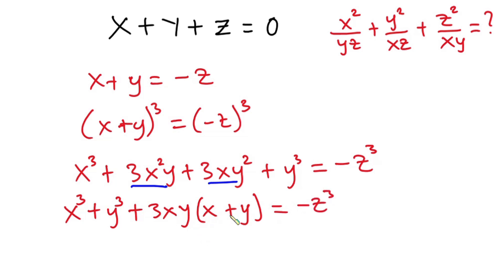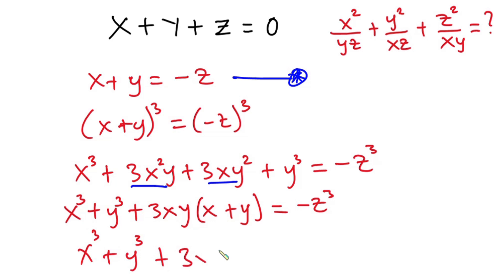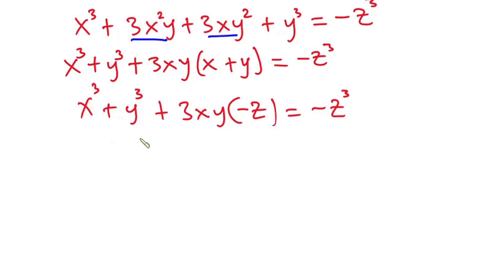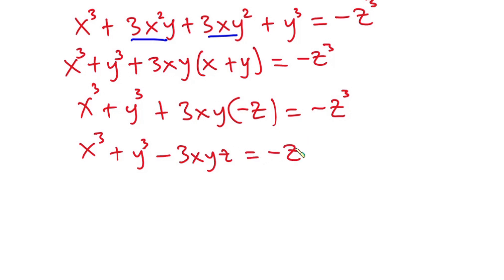So now we have x plus y over here. Looking at this equation, we have x plus y which equals negative z. So in place of x plus y, I'm going to put negative z. So we have x to the third power plus y to the third power plus 3xy times negative z is equal to negative z to the third power. From here we have x to the third power plus y to the third power minus 3xyz is equal to negative z to the third power.